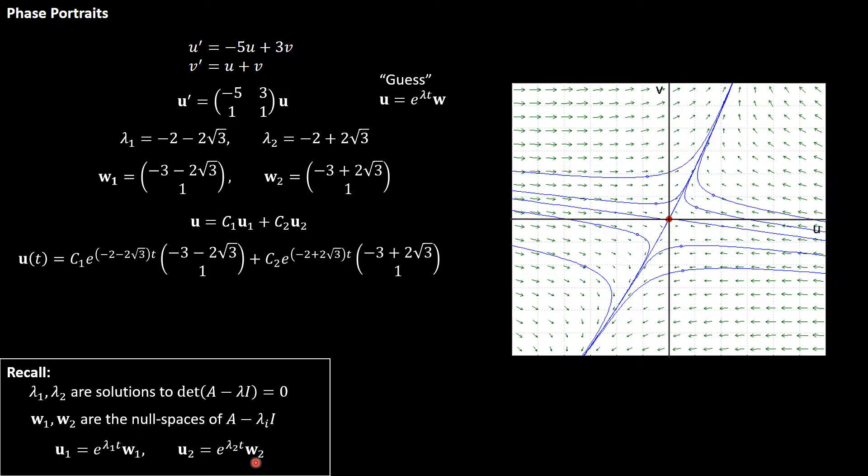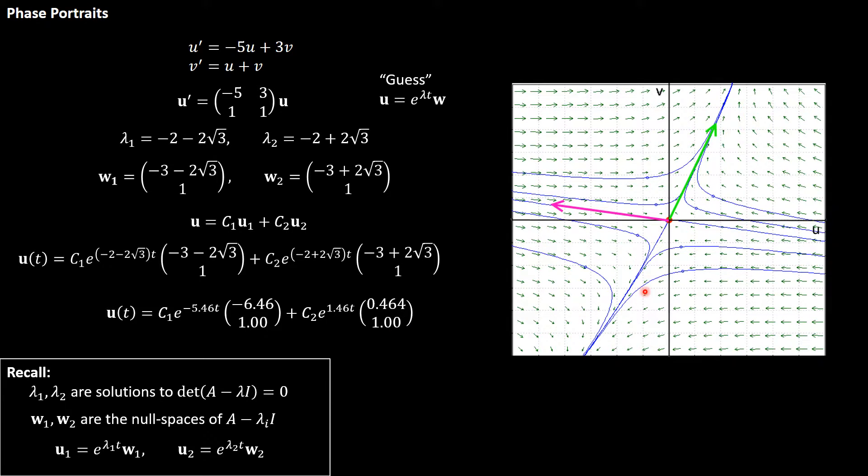u2 is e to the lambda 2 t w2, which I've written out here in full. This is admittedly pretty ugly with all these square roots, it's kind of hard to read, so it's desirable in a lot of cases to write this in decimal form which I've done. This is our actual general solution where I've rounded to three decimal places. If we plot these two vectors, negative 0.461 and 0.464 comma 1, those two vectors are the purple vector and the green vector.